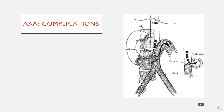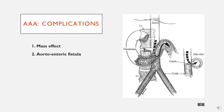In terms of complications of triple-A's — which is where it might come up in your exams, especially with an acutely unwell patient presenting with abdominal pain — the first is mass effect, where the aneurysm exerts pressure on nearby structures such as the inferior vena cava. They can also lead to aorto-enteric fistulae, where the aorta forms a connection with part of the bowel, allowing blood into the bowel and bowel contents into the aorta.